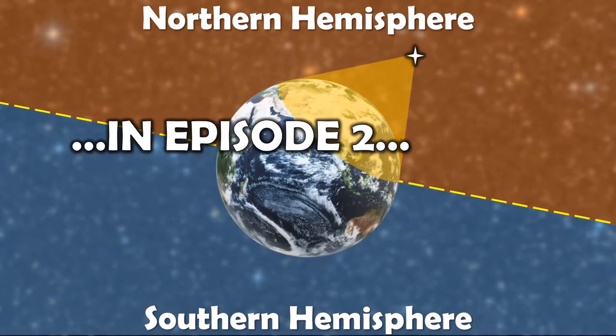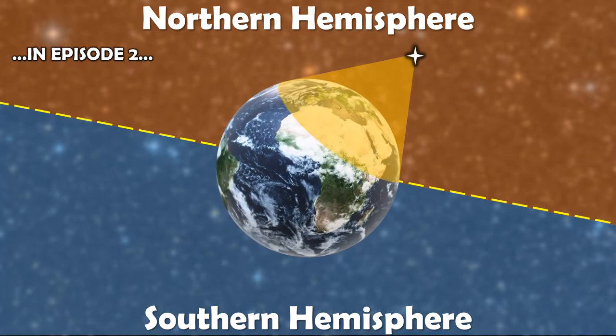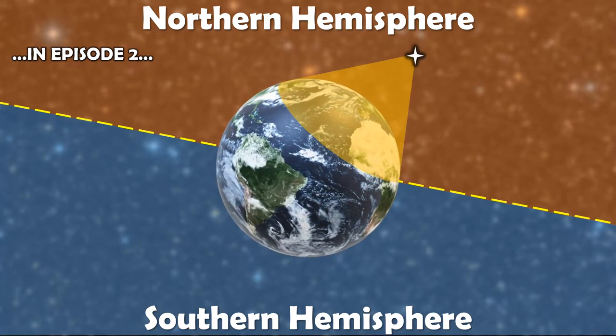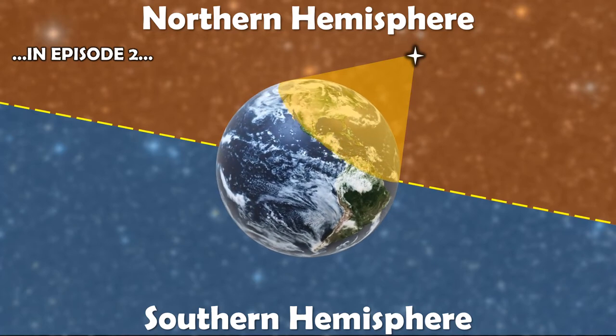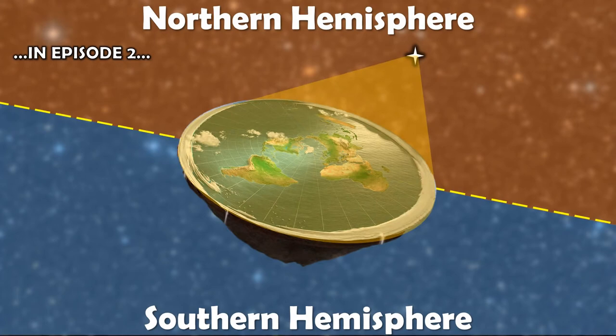Episode 2 had us gazing at the stars, or at least half of them, by exploring how northern and southern constellations, being visible depending on whether you're in the northern or southern hemisphere, strongly suggests a globe Earth since a flat Earth shouldn't have this problem.